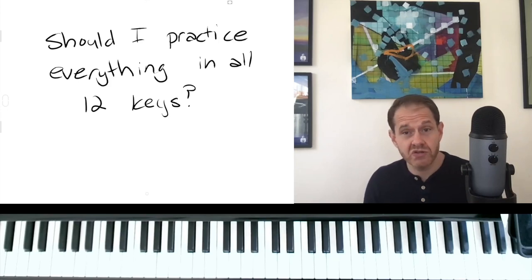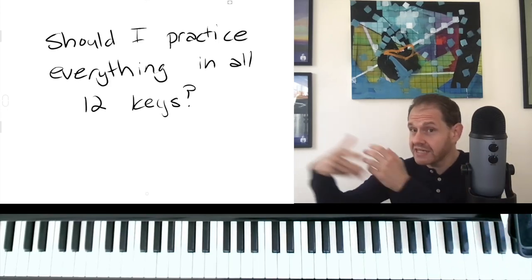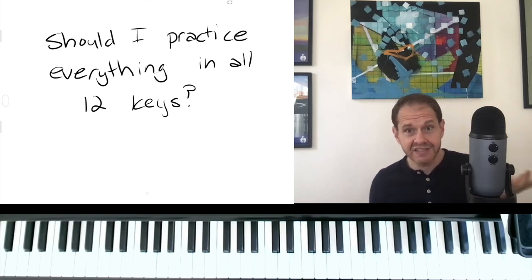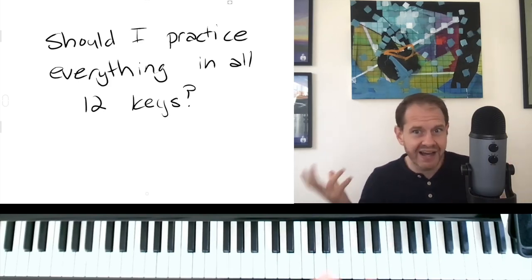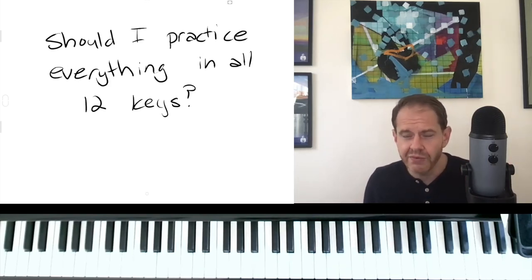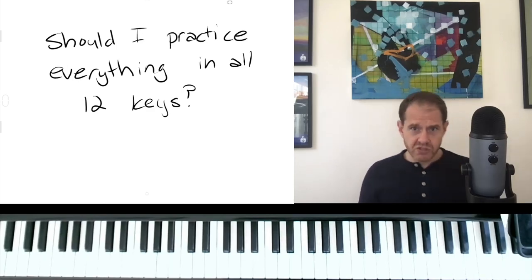Even normal jazz tunes like Cherokee goes to B major on the bridge, All the Things You Are goes to E major on the bridge. Ellington and Strayhorn love writing in D flat—I think it was this key that maybe was associated with Debussy, in my mind at least.